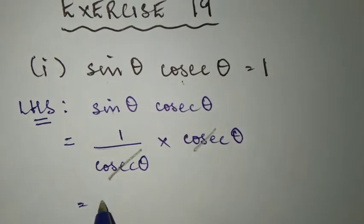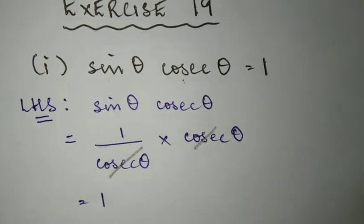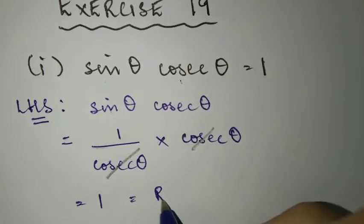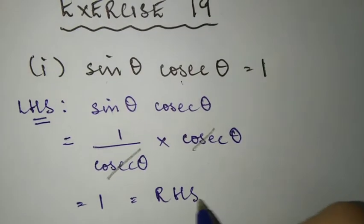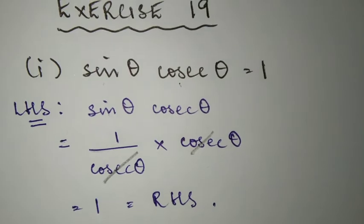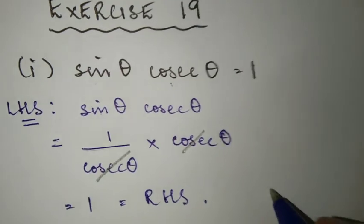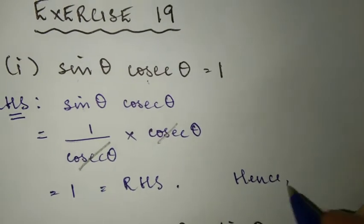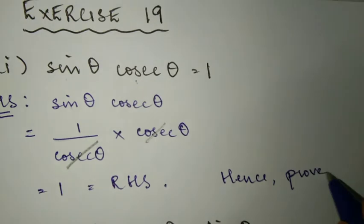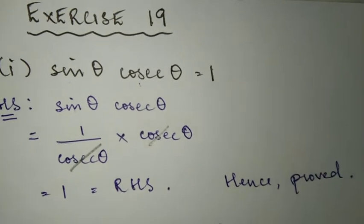So you will get 1, which is what they want on the right-hand side. So it will be equal to RHS, hence proved. That will be the final answer.